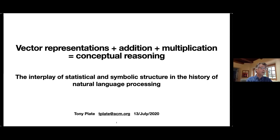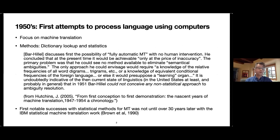In the very first years of attempts to use programmable computers to process human language, the focus was on providing a rough machine translation to speed up the work of a human translator. In 1951, Yehoshua Bar-Hillel, one of the first mathematicians and linguists to work on machine translation, saw statistical methods as the only way to proceed. The intriguing thing is that he identified n-gram statistics — which would later become very widely used — as the way forward. However, these early approaches did not achieve the hoped-for success.